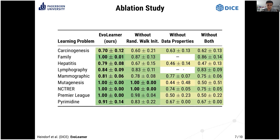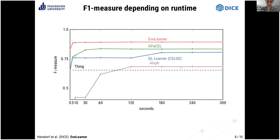We also investigated how fast our approach is compared to the state-of-the-art, evaluating performance after running the approach for a certain number of seconds. After only 5 or 10 seconds, EvoLearner achieves very good results, whereas other approaches take much longer to reach the same performance. Notably, at second zero — directly after our initialization, performing only the random walks without any evolutionary algorithm — we are already achieving very good results.